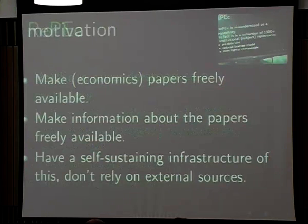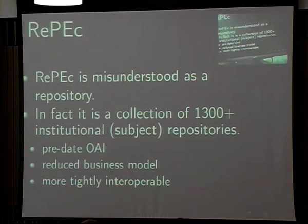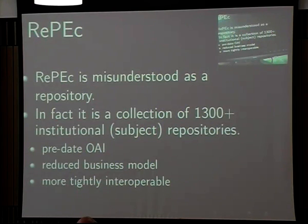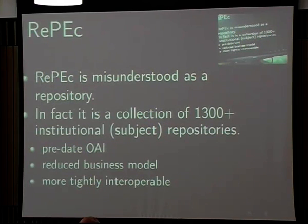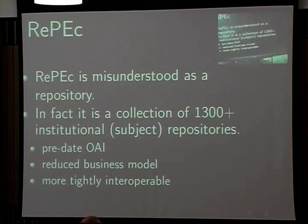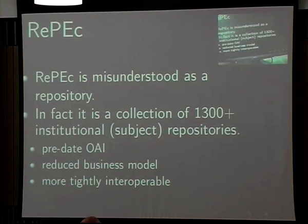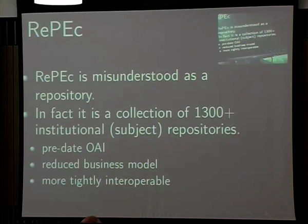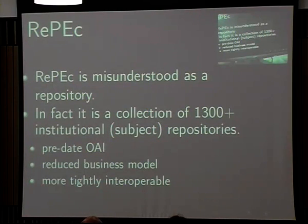RAPIC is often misunderstood as a repository for economics. It actually is a collection of about 1,350 institutional repositories — mainly economics departments and research centers that provide economics research. Since I started this in the 1990s, it really predates OAI. Compared to institutional repositories, it has a more reduced business model, and the repositories that constitute the RAPIC digital library are interoperable in a tighter way than you would typically see in an institutional repository.